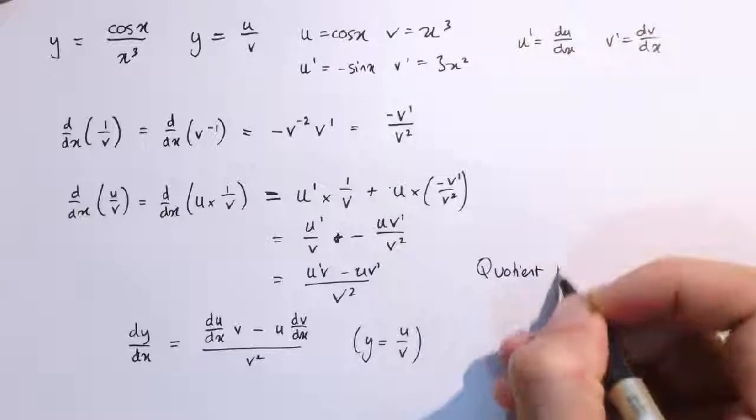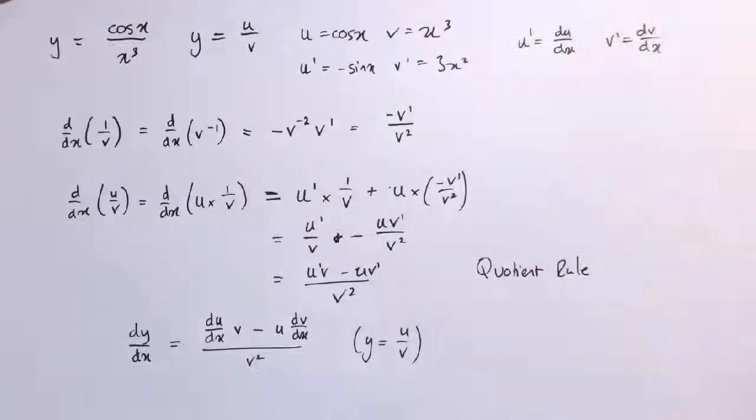And here y would have to be u over v. So that's the quotient rule. Quite interesting then that actually when we proved the product rule, we just needed to use the chain rule, and the quotient rule just relied on the proof, the fact that the chain rule and the product rule had already been proved.